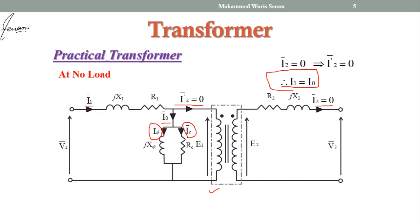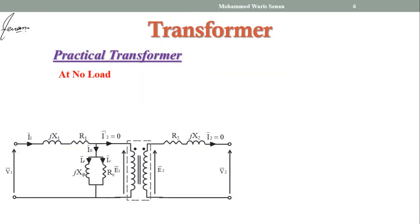Let us draw the phasor diagram of practical transformer on no load. We have 8 phasors to draw: V1, I1, I0, Iφ, Ic, E1, E2, and V2. We take φM as the reference phasor, as we have done previously. E1 leads φM by 90 degrees — we draw E1 by taking 90 degrees in the anti-clockwise direction.